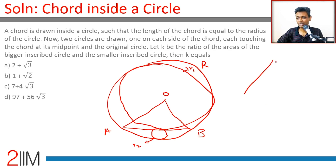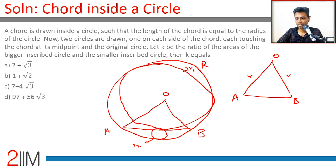Look at triangle OAB: OA is radius, OB is radius, and AB is also radius — it's equilateral. Therefore OC, the perpendicular from center to chord, is (√3/2)·r.